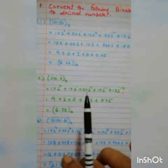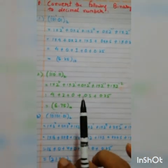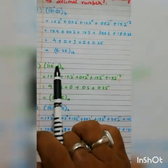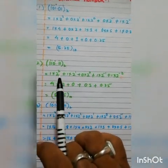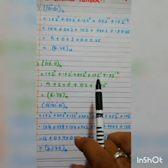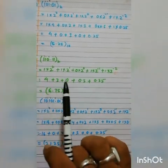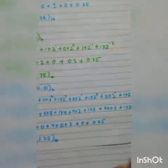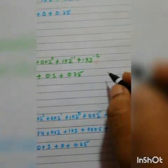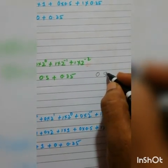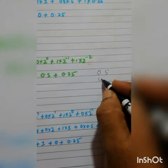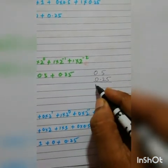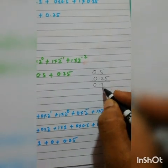Similarly, for the second binary number: put the powers, multiply each digit by the corresponding power of 2, then add the values. We get 4 + 2 = 6, plus the fractional parts 0.5 and 0.25, which gives 0.75. So the result after adding is 6.75.